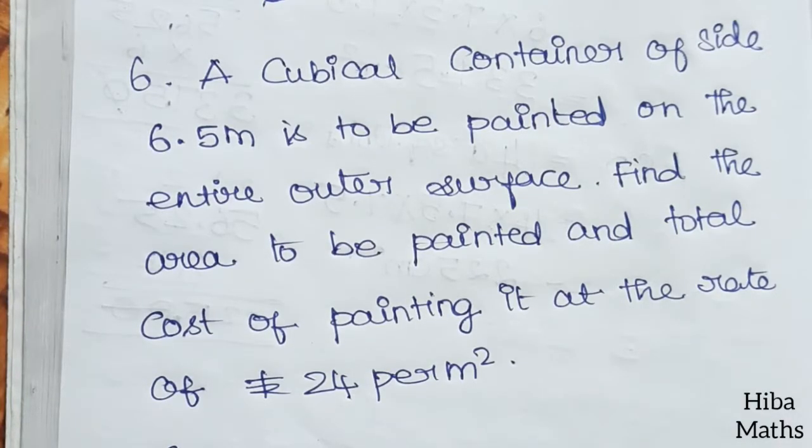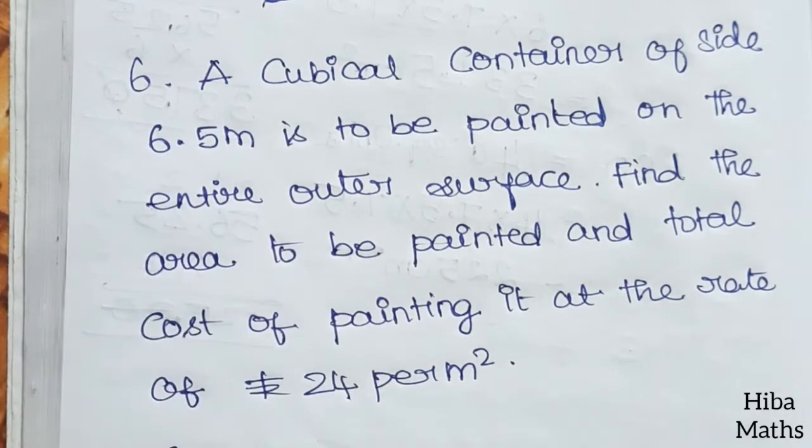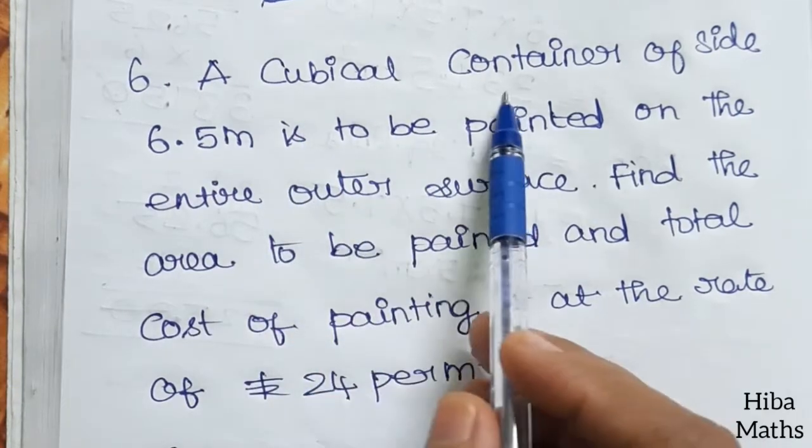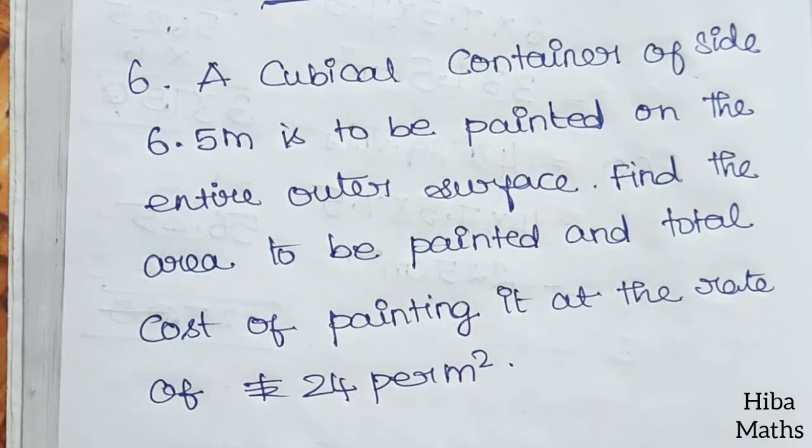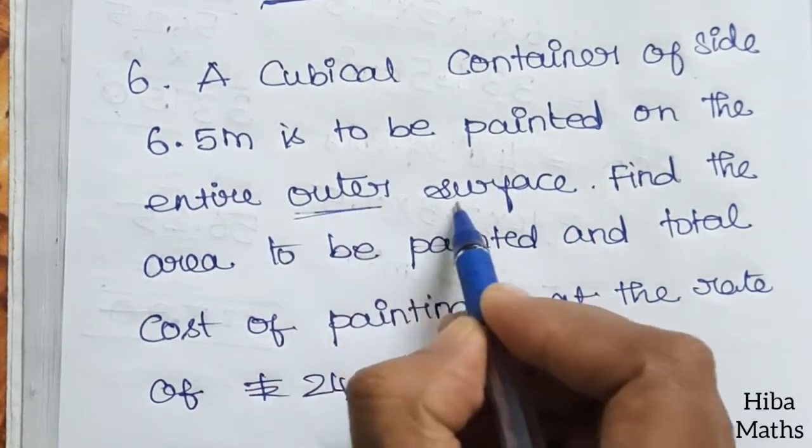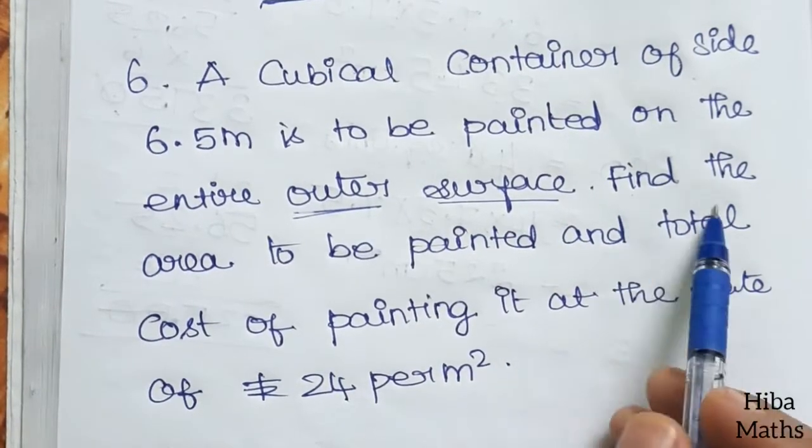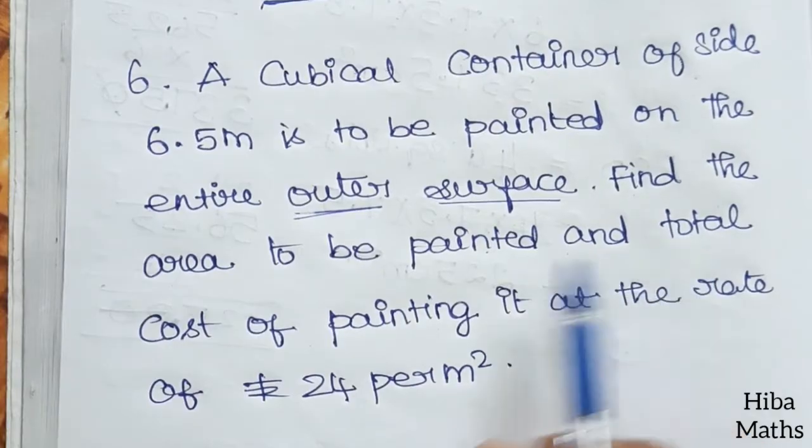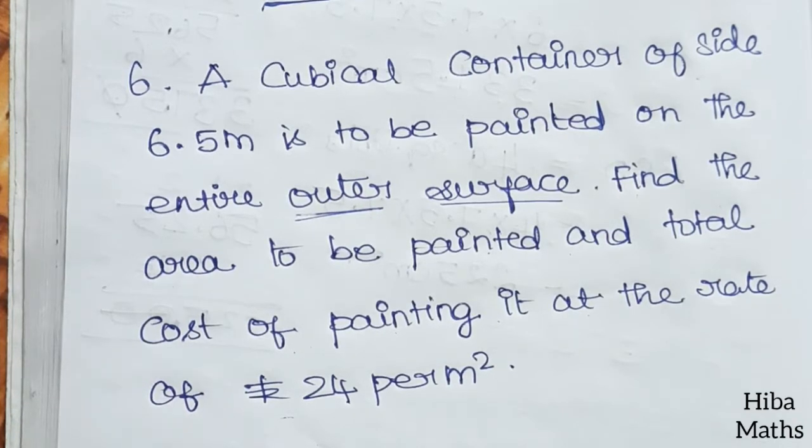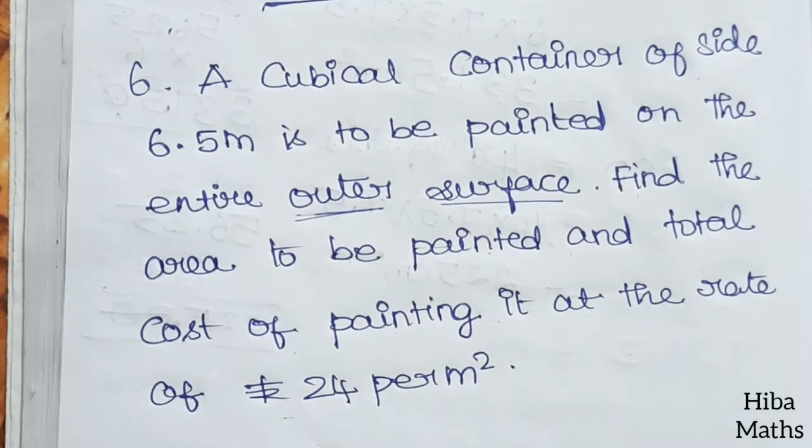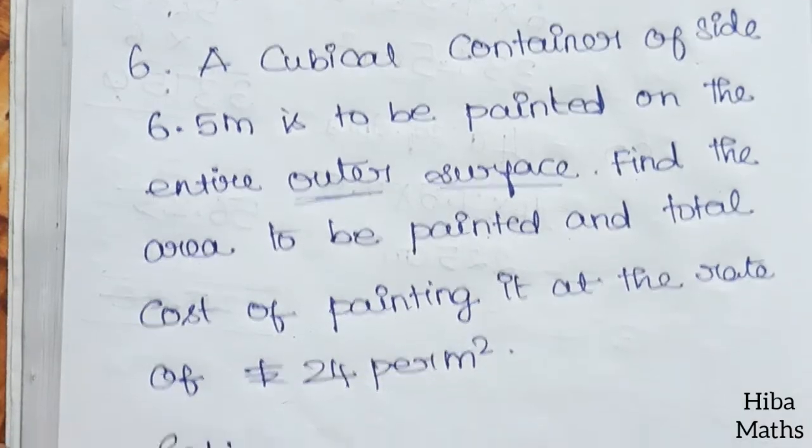Hello students, welcome to Hiba Maths 9th Standard Math Chapter 7 Exercise 7.2, Question 6. The problem says that a cubical container of side 6.5 meters is to be painted on the entire outer surface. Find the area to be painted and total cost of painting it at the rate of ₹24 per meter square. The outer surface is TSA.